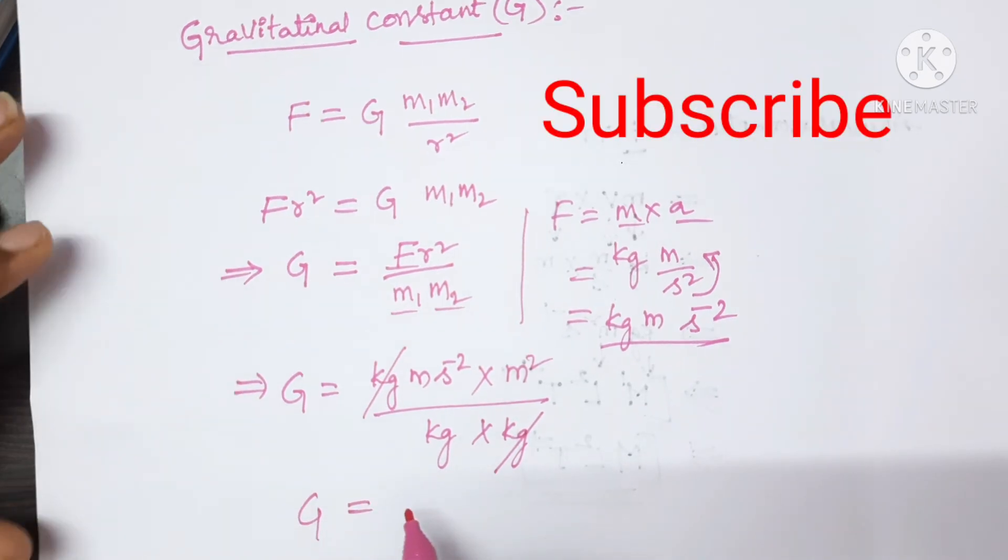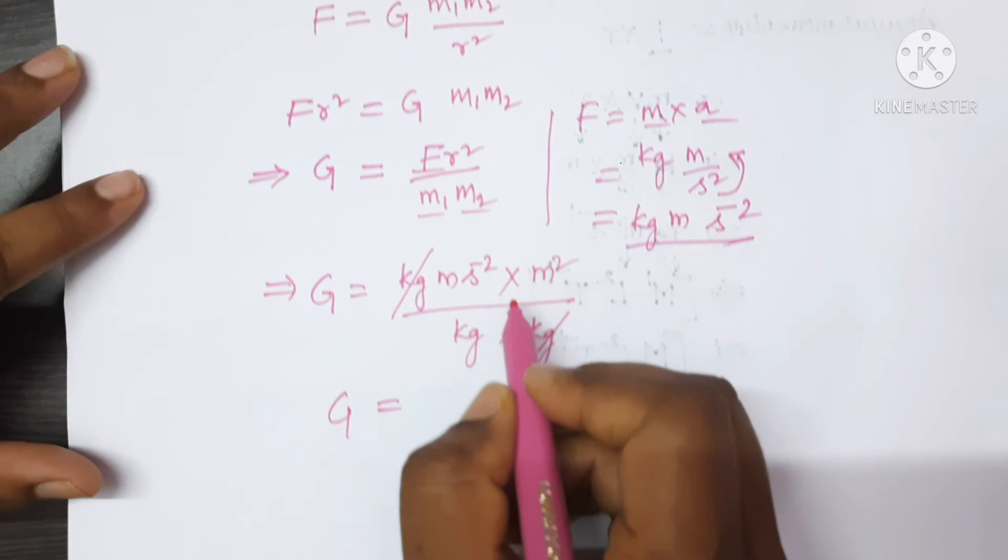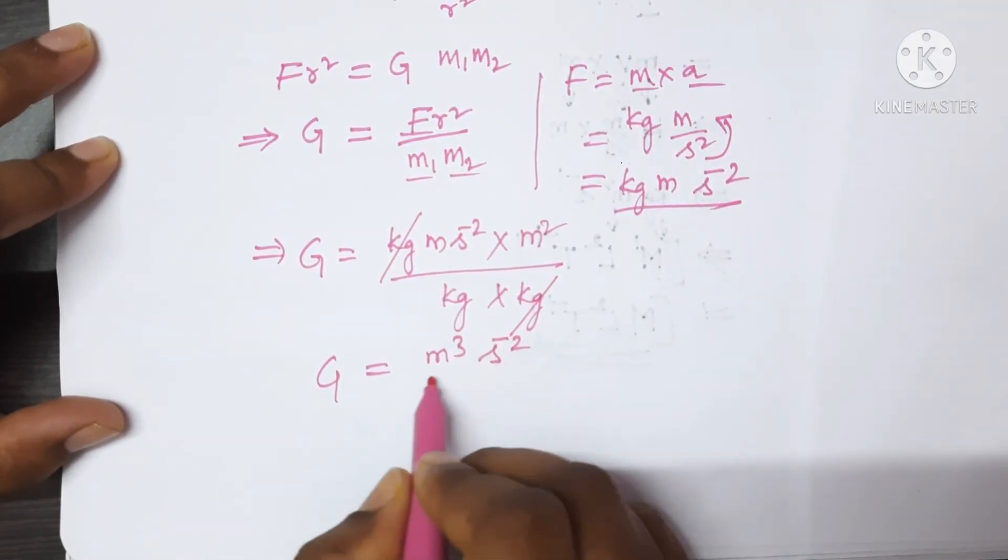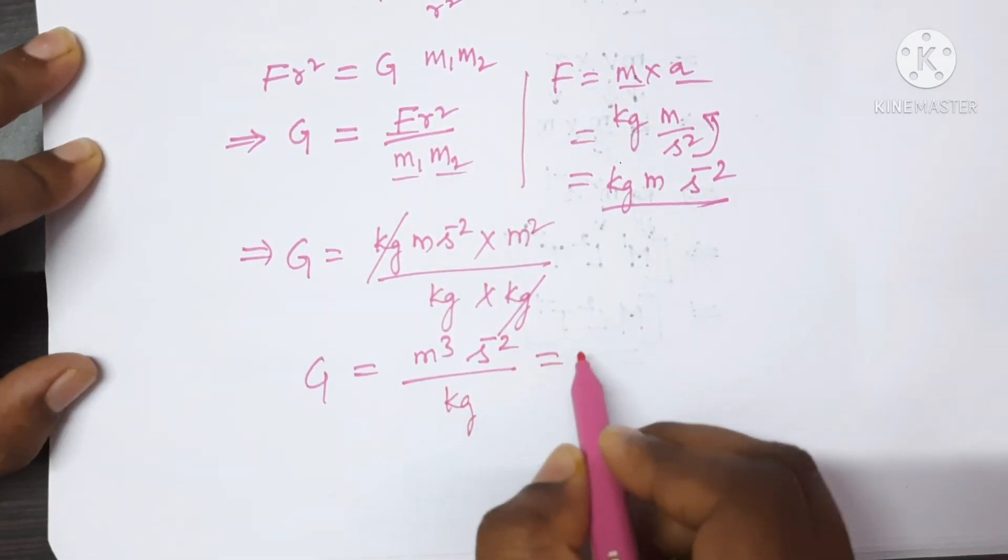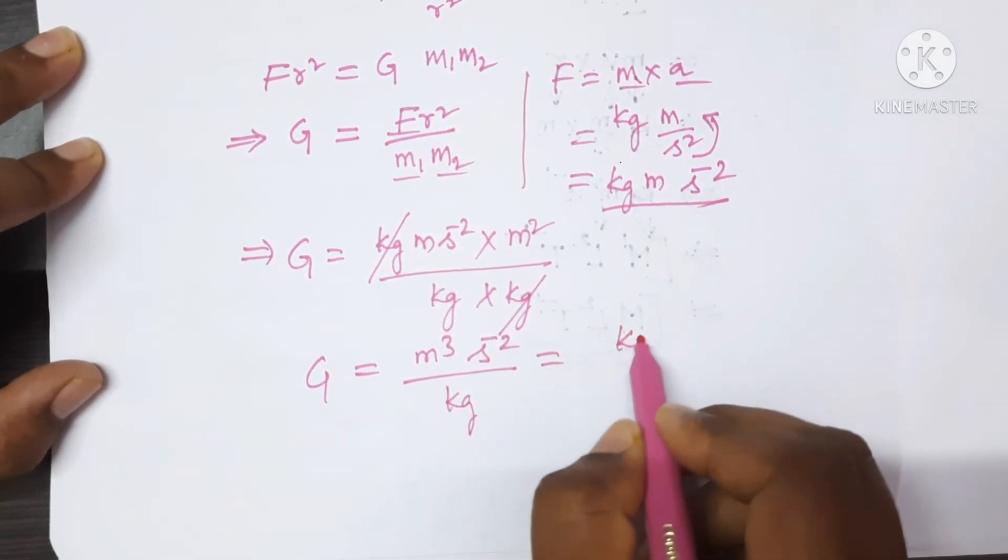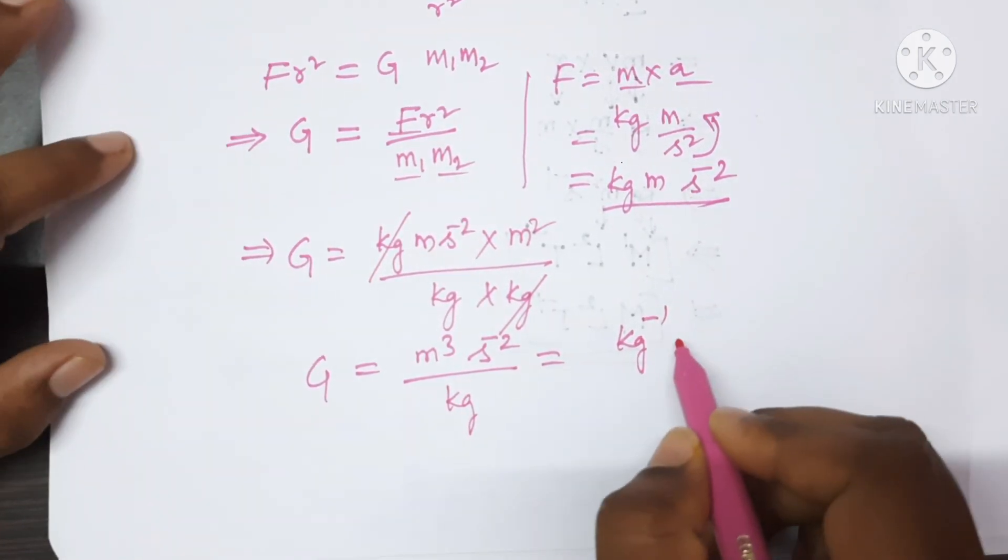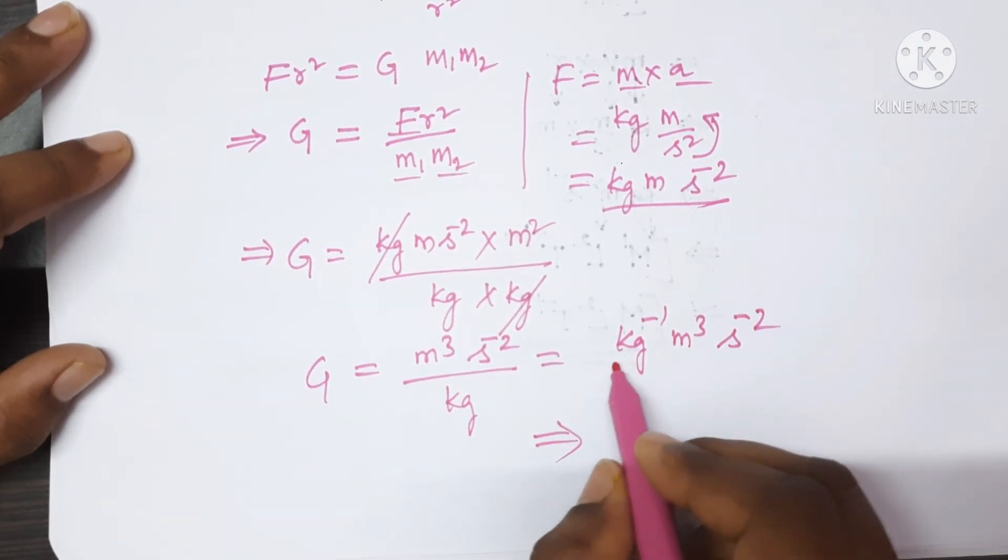The remaining terms are meter times meter, meter cube, and S to the power of minus 2 divided by one kilogram. Simplify this by writing kilogram on the numerator as M cube S to the power of minus 2. Now here is the formula.